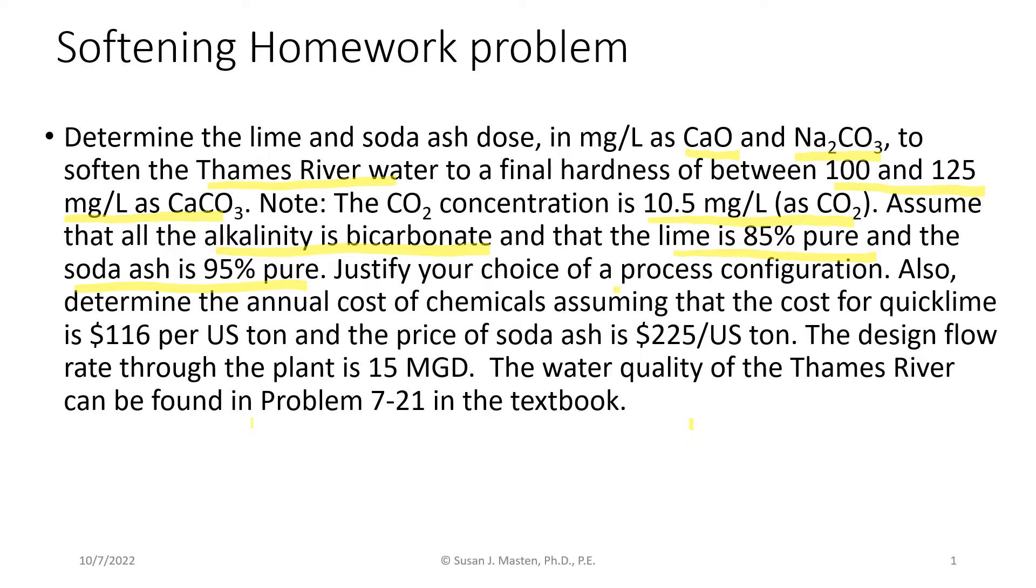You're asked to justify your choice with a process configuration and then determine the annual cost of chemicals given that quicklime calcium oxide costs $116 per U.S. ton and soda ash is $225 per U.S. ton. You're told that the design flow rate is 15 million gallons per day, and the water quality for the Thames River can be found in problem 7-21 in the textbook.